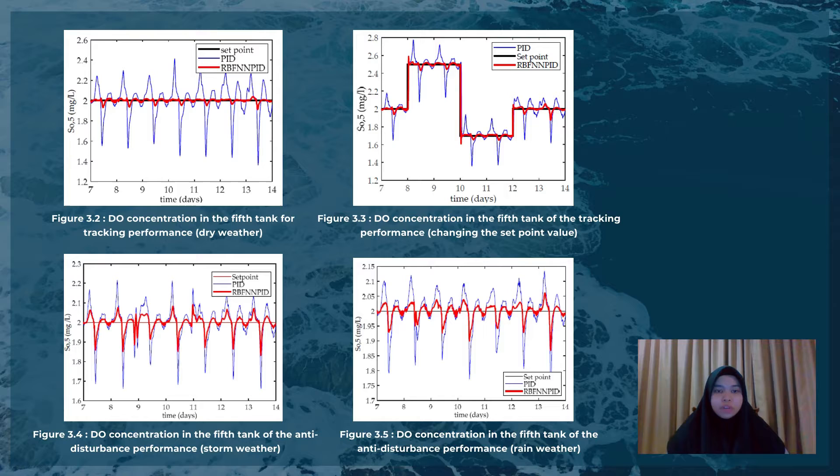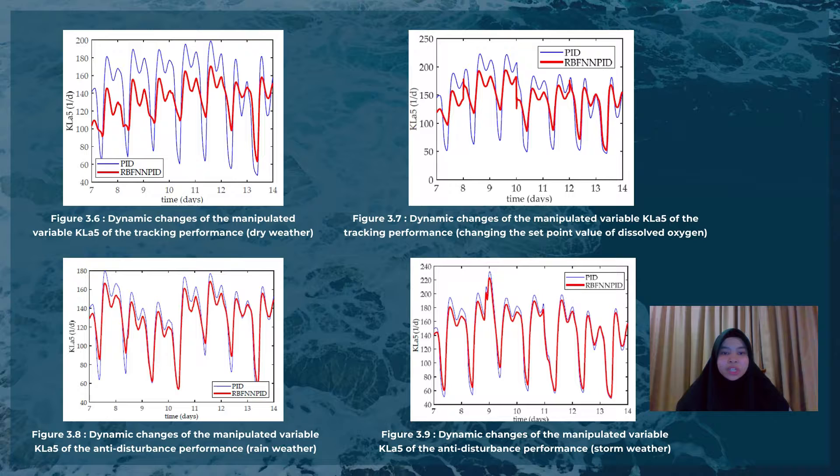The simulation results in figures 3.2, 3.3, 3.4, and 3.5 showed that when the influent flow rate and quality change significantly, it is difficult to maintain the dissolved oxygen concentration at the set point under the control of the conventional incremental PID controller. However, by modifying the airflow, RBF-NPID can efficiently maintain the dissolved oxygen concentration with minimal error around specific values, as shown in figures 3.6, 3.7, 3.8, and 3.9.